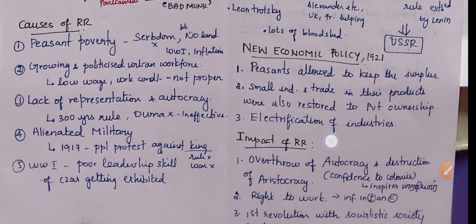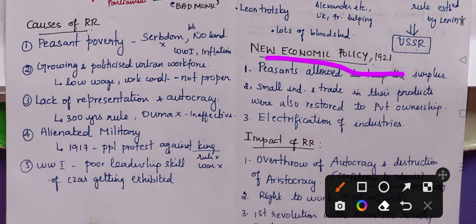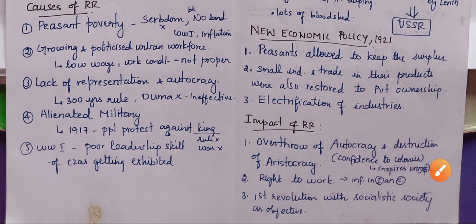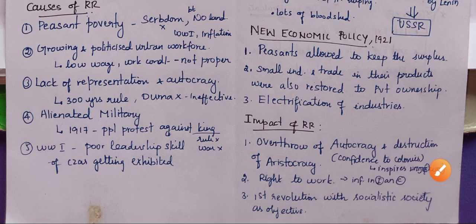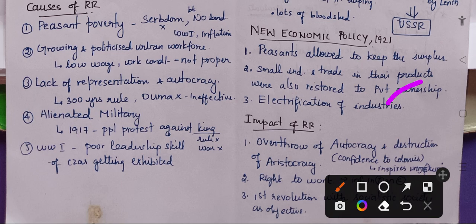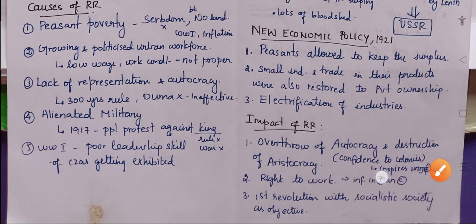Then we had the New Economic Policy of 1921. In this policy, peasants were allowed to keep the surplus. Small industries and trade in their products were also restored to private ownership. Electrification of industry was also carried out. These are the key features of the New Economic Policy.